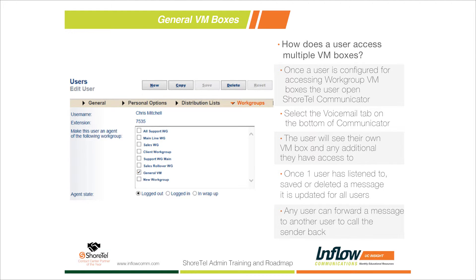Now that I've been given access to the general mailbox, the user simply launches Communicator. If they already have it open, it will add the mailbox live about 95% of the time; occasionally they'll need to close and reopen Communicator. I clicked over to the voicemail tab at the very bottom of Communicator, and you can see I have my Chris Mitchell mailbox with two messages, and now I also have a new General voicemail box with two messages. The General mailbox is bold because there's at least one unread message; my personal mailbox is not bold because I've listened to both messages.